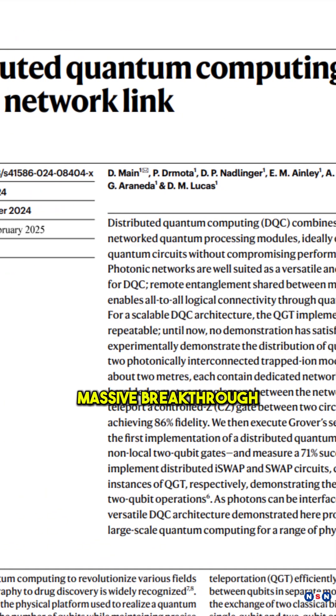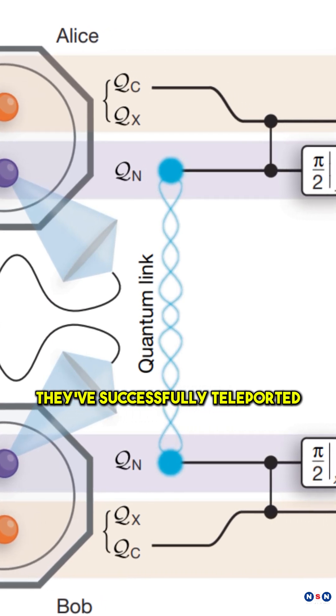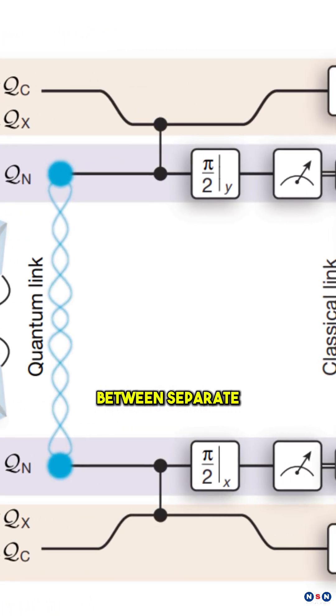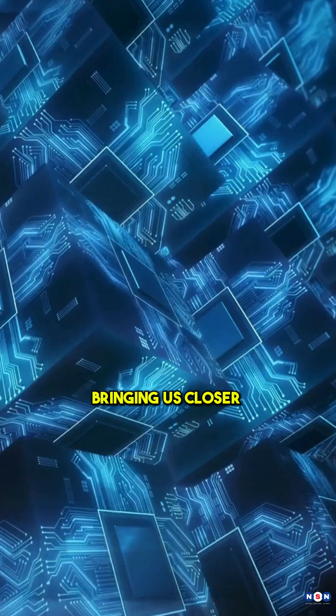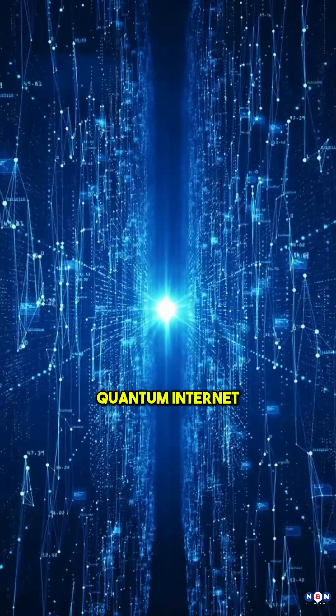Oxford scientists have just made a massive breakthrough in quantum computing. They've successfully teleported logical quantum gates between separate quantum processors, bringing us closer to large-scale quantum supercomputers and even a future quantum internet.